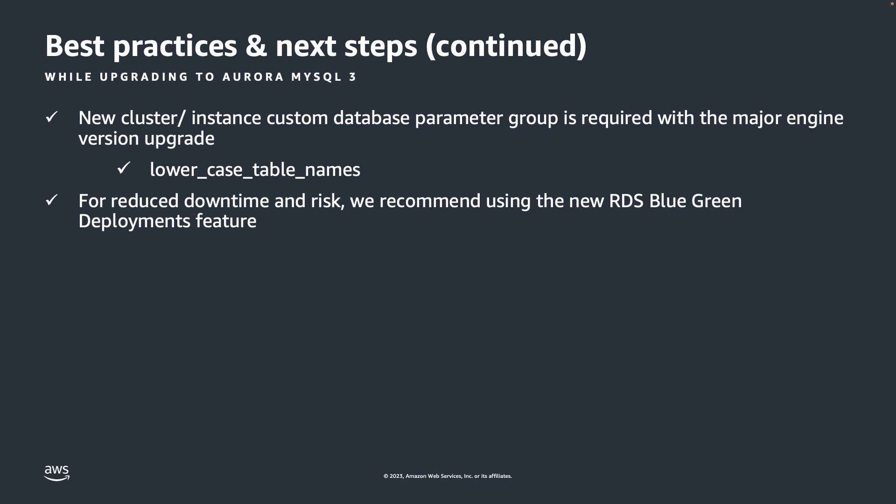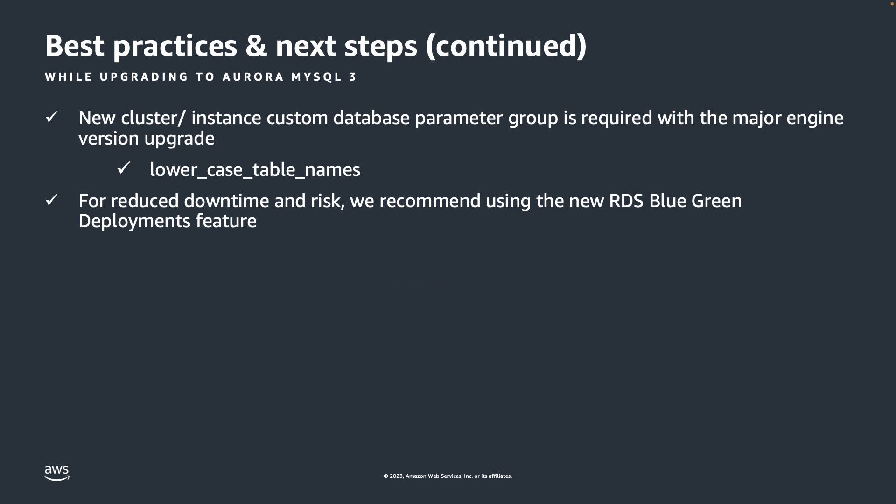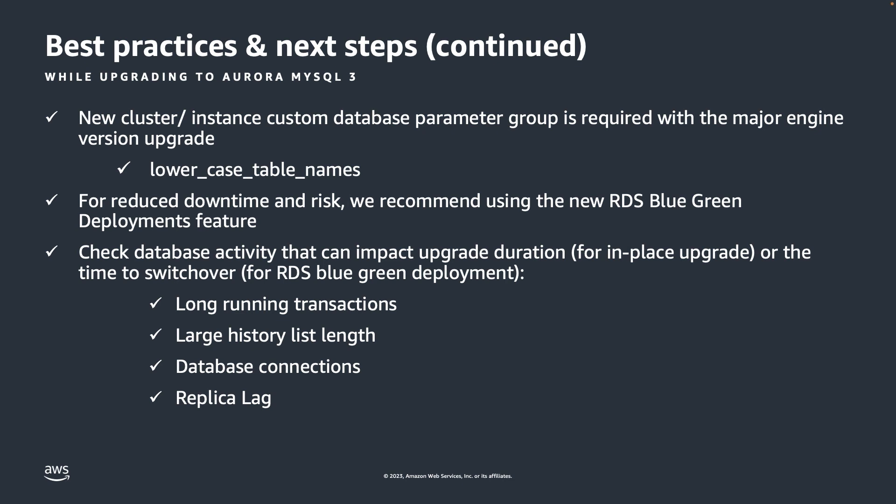As we have different methods to perform major version upgrade on your Aurora cluster — whether in-place upgrade, snapshot restore, or clones — if you'd like to do this upgrade with reduced downtime and reduced risk, you can use the RDS blue-green deployment feature and test it by creating your own deployment using the AWS console or the CLI. Whether choosing the in-place upgrade or the RDS blue-green deployment, make sure to review database activity when making the modification, which will impact the duration of the upgrade. Look at long-running transactions using the SHOW FULL PROCESSLIST query, the large history list length from SHOW ENGINE INNODB STATUS, and CloudWatch metrics like database connections and replica lag to ensure a smooth upgrade with limited downtime.